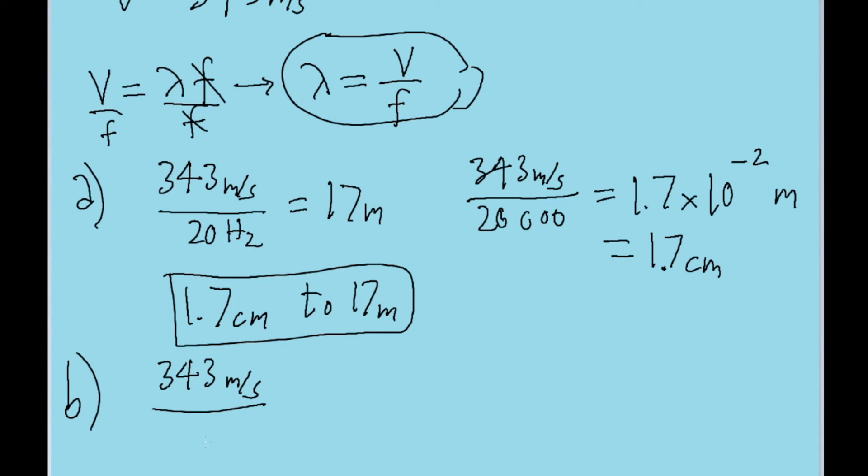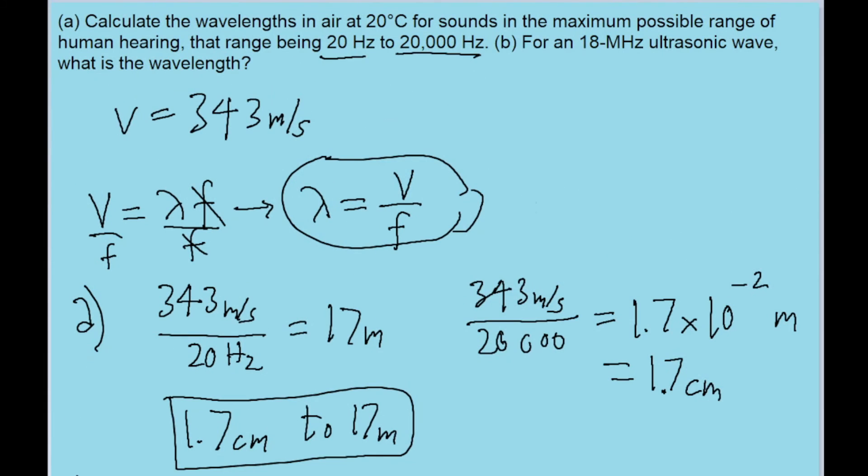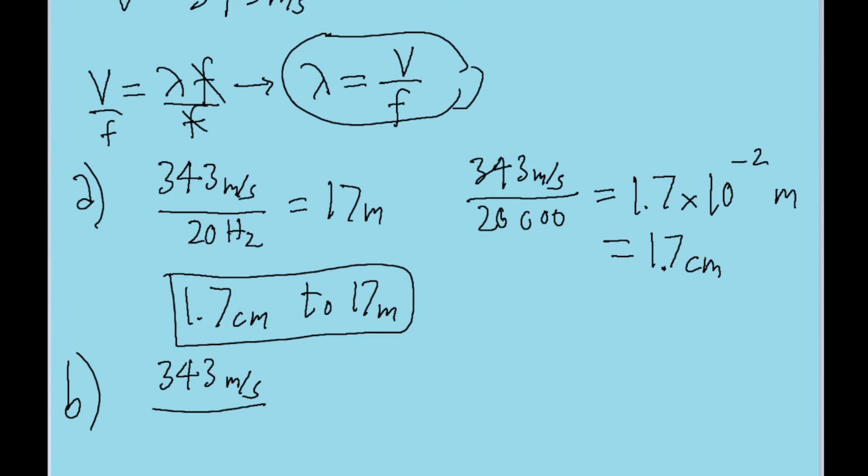But it's going to be 343 meters per second divided by, and that's megahertz. So that means we're going to be taking 18 and multiplying it by 10 to the power of 6, for hertz.